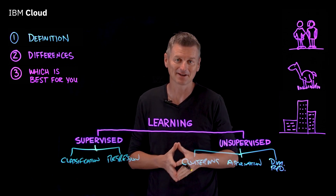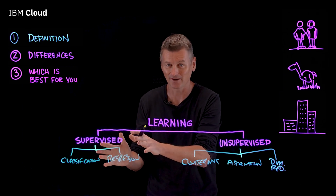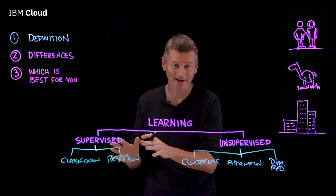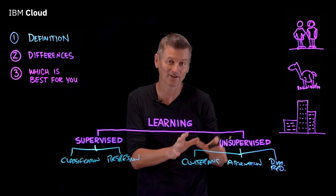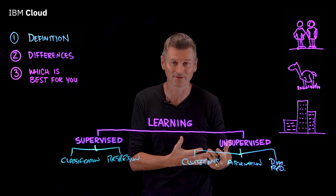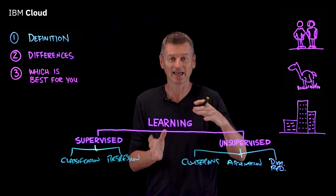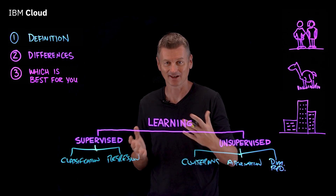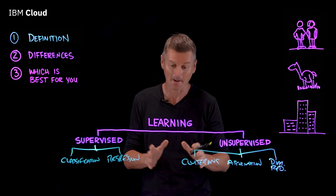Classifying big data can be a real challenge in supervised learning, but the results are highly accurate and trustworthy. Unsupervised learning can handle large volumes of data in real time, but there's a lack of transparency into how that data is clustered and a higher risk of inaccurate results.